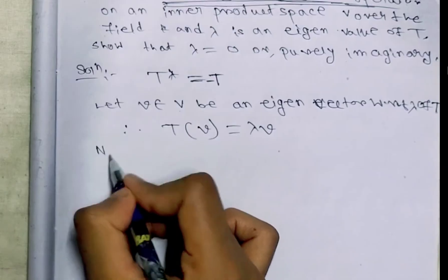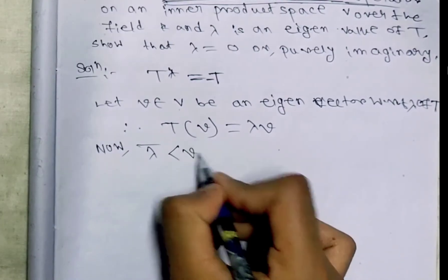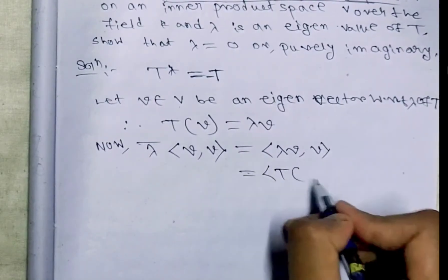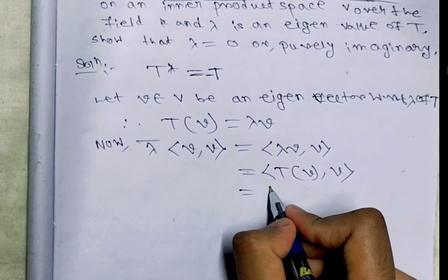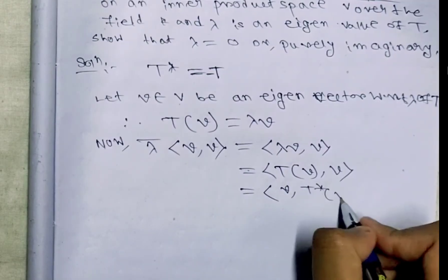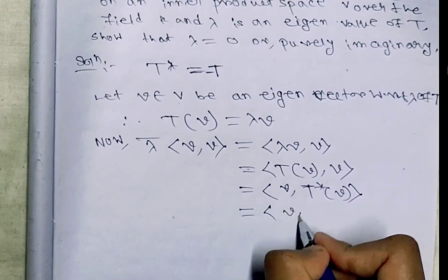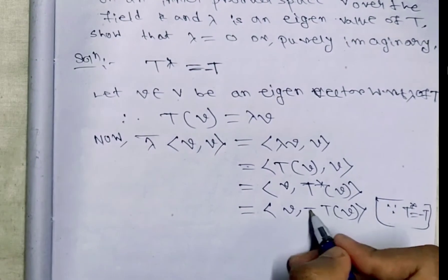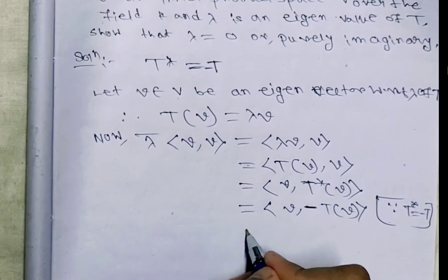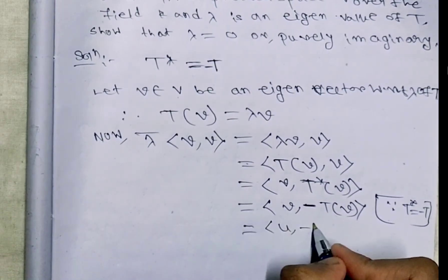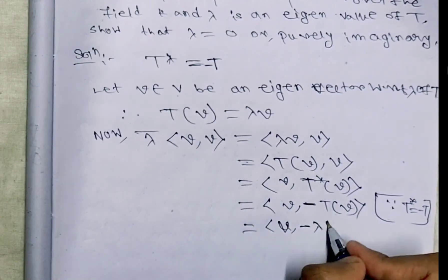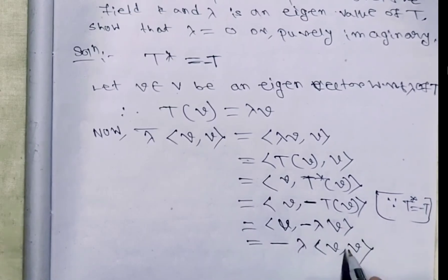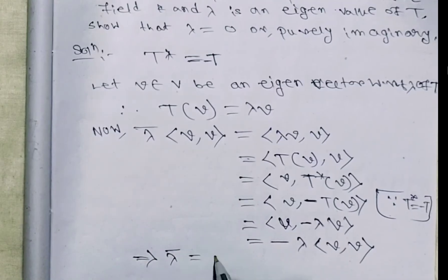Now, lambda-bar times <v,v> equals <lambda·v, v> equals <T(v), v>. This equals <v, T*(v)>, and since T* equals minus T, this equals <v, minus T(v)>, which equals <v, minus lambda·v>, which equals minus lambda times <v,v>. Therefore lambda-bar equals minus lambda.